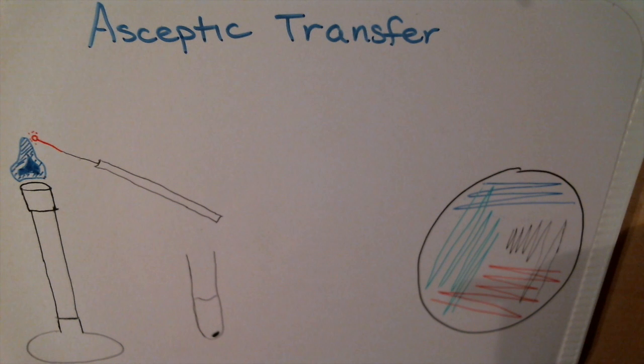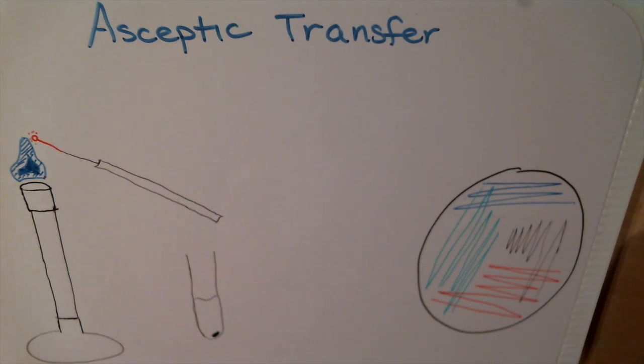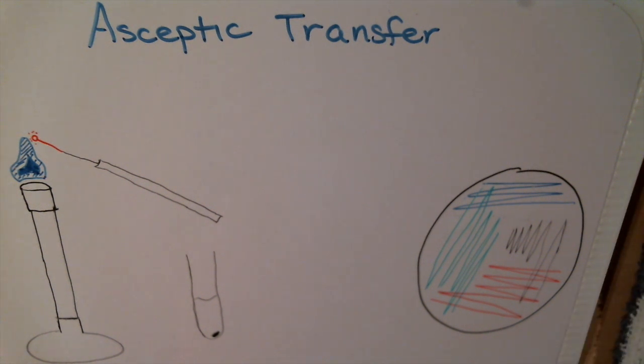After this, you'll store your plates with the agar on top into the 37 degrees incubator and wait to see your streak plates for the next day. If you have any questions about this, feel free to shoot me an email and I'll answer your questions. Look forward to hearing from you.